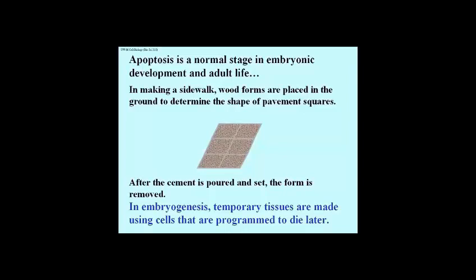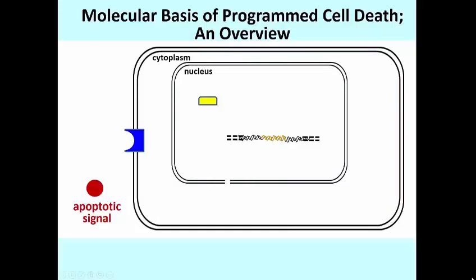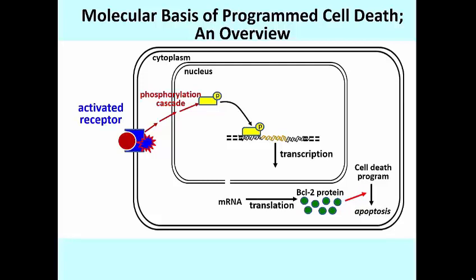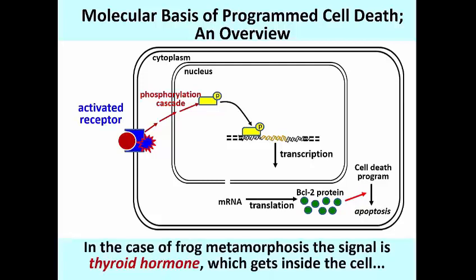Another perhaps more familiar example of programmed cell death is metamorphosis, in which tadpole or caterpillar cells die to be replaced by frog or butterfly cells. Like many other regulated cell activities, apoptosis starts with an external signal. This diagram is shorthand for a signal transduction pathway that generates a transcription factor, which activates BCL-2 genes that lead to the synthesis of BCL-2 proteins. For the frog, metamorphosis results from the activation of genes initially stimulated by thyroid hormone, which actually gets inside the cell and then into the nucleus to deliver its message.